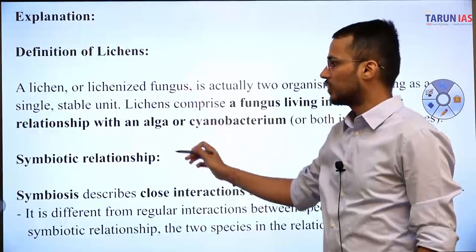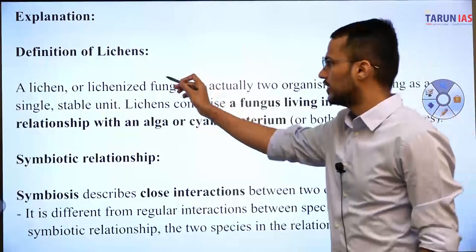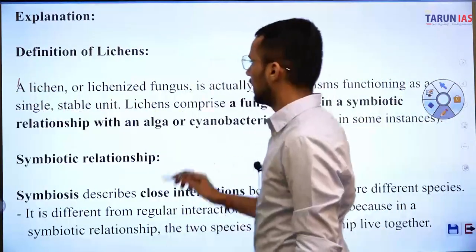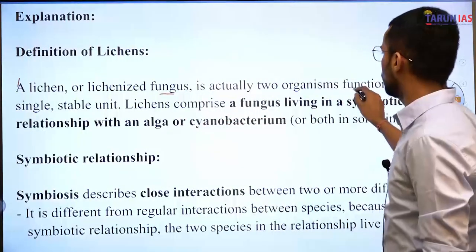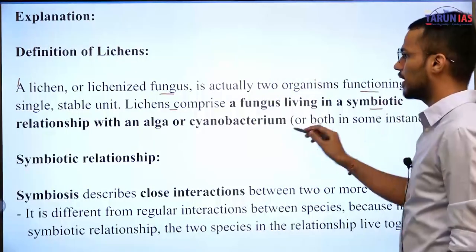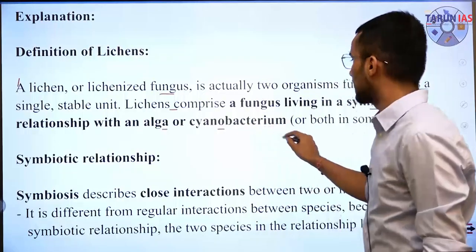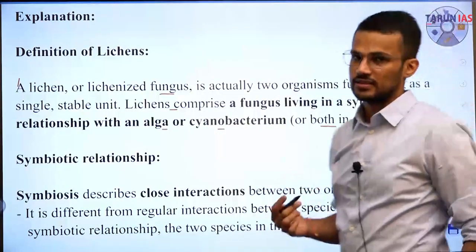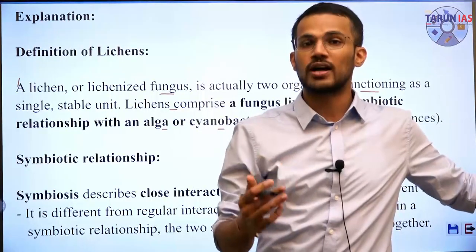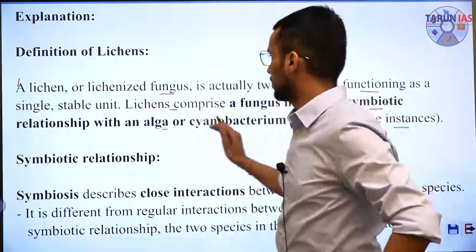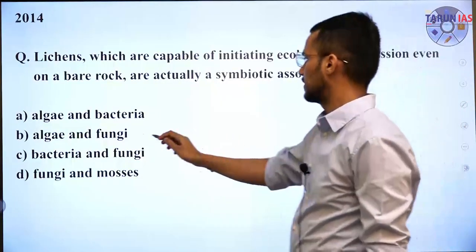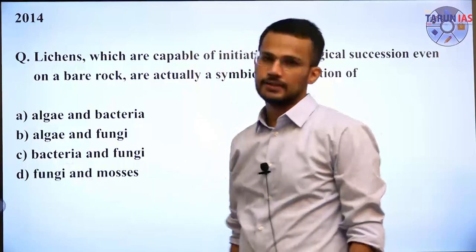A lichen or lichenized fungus is actually two organisms functioning as a single stable unit. Lichens comprise a fungus living in a symbiotic relationship with an alga or cyanobacterium, or both in some instances. So it is the symbiotic association of fungi and algae, or in some cases fungi and cyanobacterium. The answer to this question is fungi and algae.